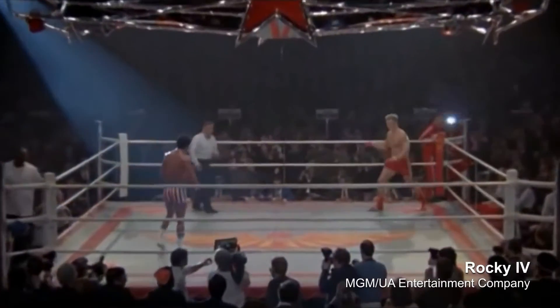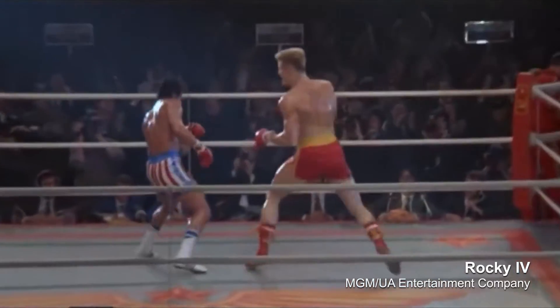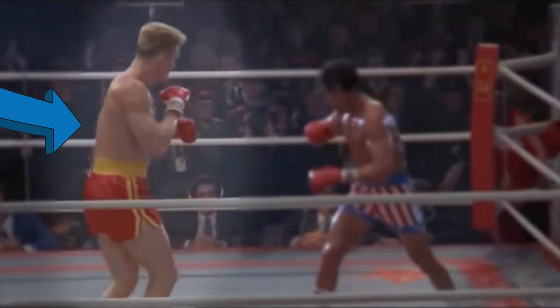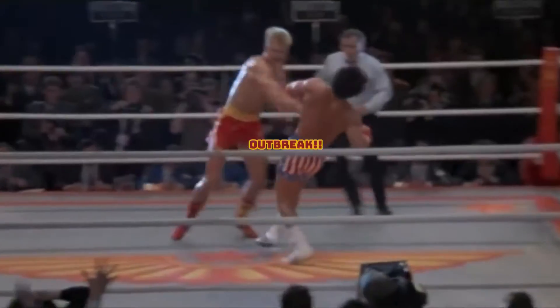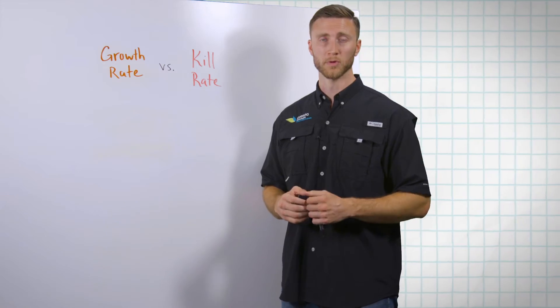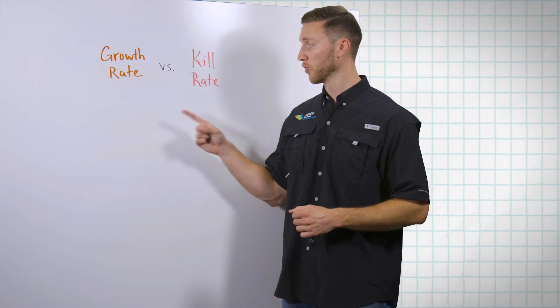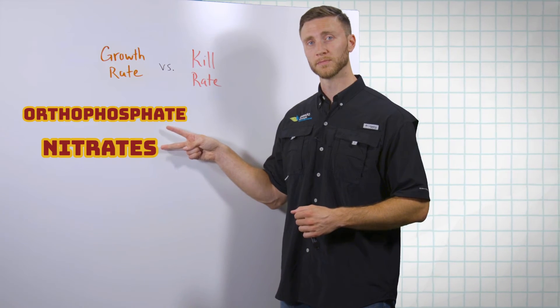Let's look at this as if it were a heavyweight boxing match. In the growth rate corner, we're talking about reproductive speed. In order to reproduce, any microorganism — including algae — needs nutrients. In swimming pools, those usually come in the form of orthophosphate and nitrates.